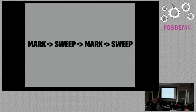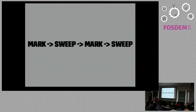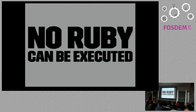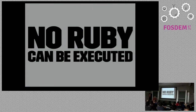Garbage collection looked like this: a whole long mark phase and a whole long sweep phase, then you were done with GC. Sweeping always immediately came after marking. In a large Rails application with 400,000 or even a million active objects, this could take a very long time — a million objects could take a second to mark all the way through. No Ruby can be executed during that time, which is not convenient for a web application where responses normally take 10 milliseconds.